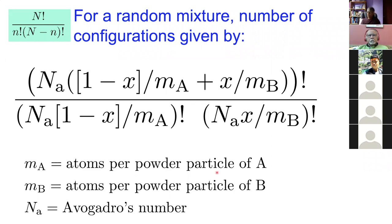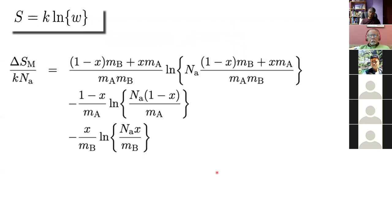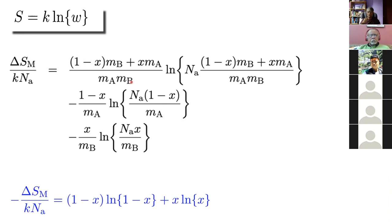Taking the logarithm using Stirling's approximation gives an equation for configurational entropy that is a longer expression. If we set MA and MB to be a single atom — one atom per particle — it reduces to the standard equation. We can work out the evolution of configurational entropy as particles go from large chunks to smaller and smaller ones.